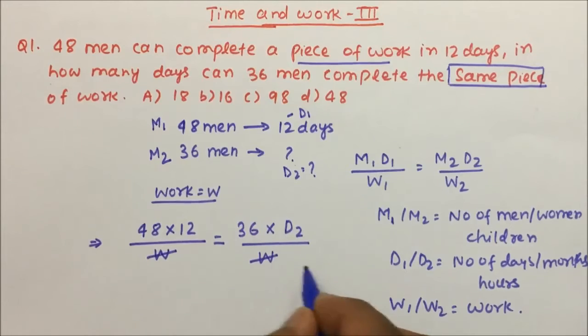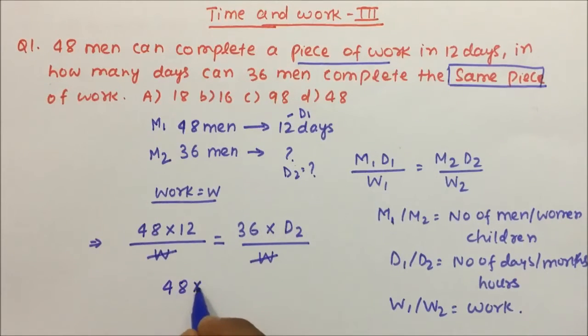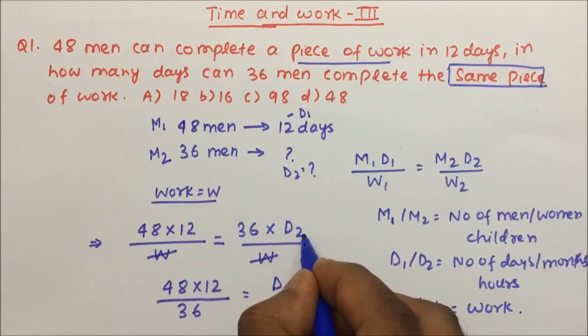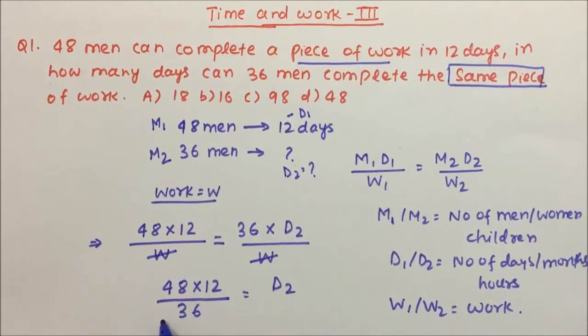This is left side and this is right side, so W and W will get cancelled. Now 48 into 12 divided by 36 will come to this side equals D2. 36 was multiplied with D2, so when I bring it to this side, 36 will come in the denominator. 48 into 12 divided by 36 equals D2.